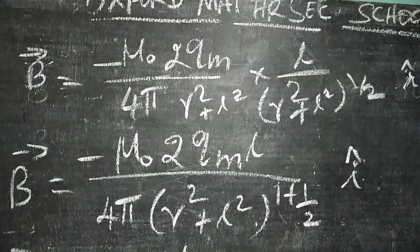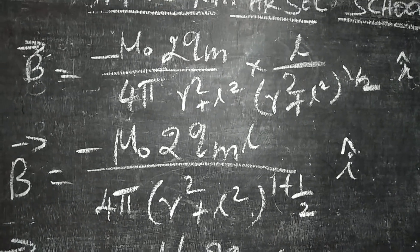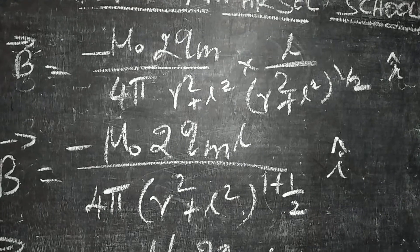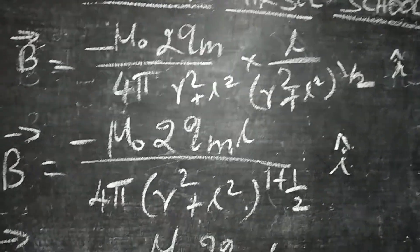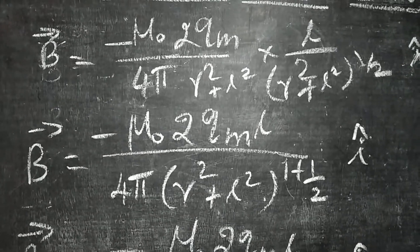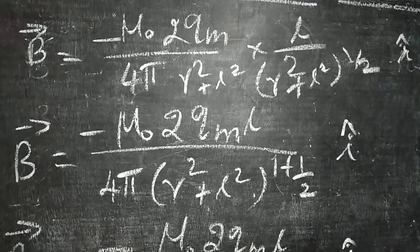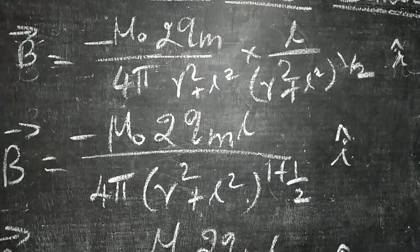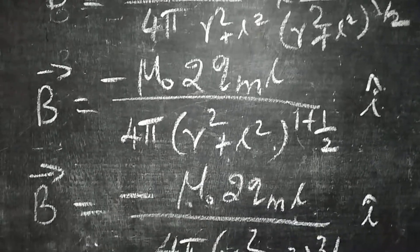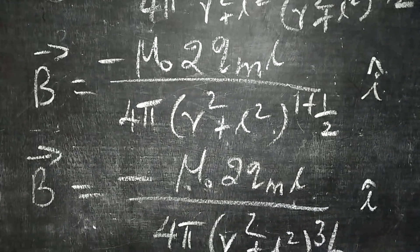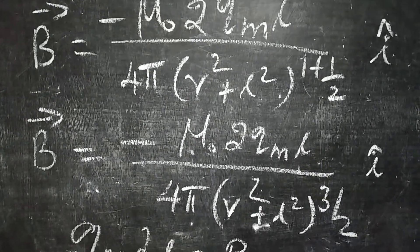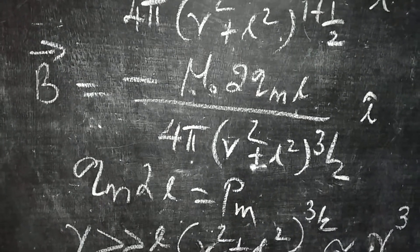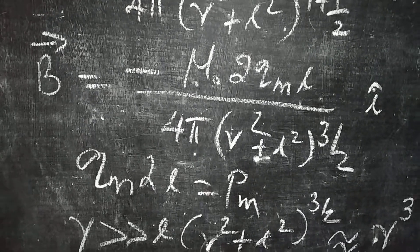B vector equals minus mu-naught over 4 pi times 2qM over R squared plus L squared, multiplied by cos theta equals L over the square root of R squared plus L squared. Simplifying, B vector equals minus mu-naught times 2qM times L divided by 4 pi times (R squared plus L squared) to the power 3/2, times î cap. Here, qM times 2L equals PM, where PM stands for magnetic dipole moment, equal to the product of pole strength and the distance between the poles.